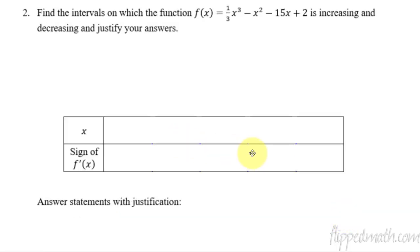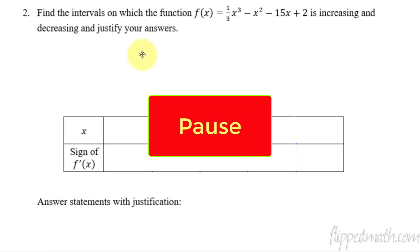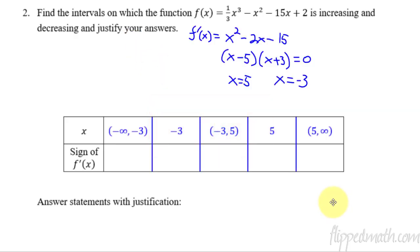Next example. I'm going to have you pause and find the critical values and try to fill out your chart — just the x values on the chart. Hopefully you came up with critical points at negative 3 and positive 5, by taking the derivative, setting it equal to 0 and solving. So that means I have these intervals written out on my chart, and I already know the derivative is going to be 0 at those critical points. Now I just need the sign in between them.